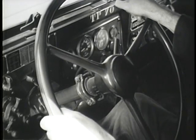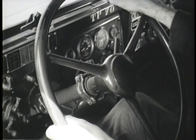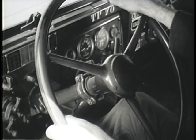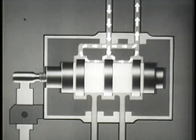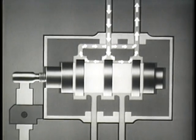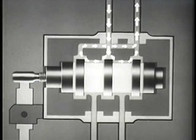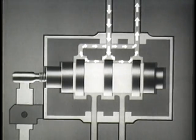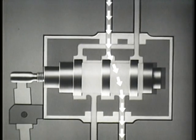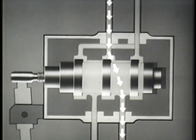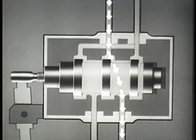As the steering wheel is turned, the up or down movement of the cam actuates the control valve lever, shifting the position of the valve spool. The spool lands, corresponding to ports on the valve housing, direct the flow of fluid from the pump to the power cylinder.